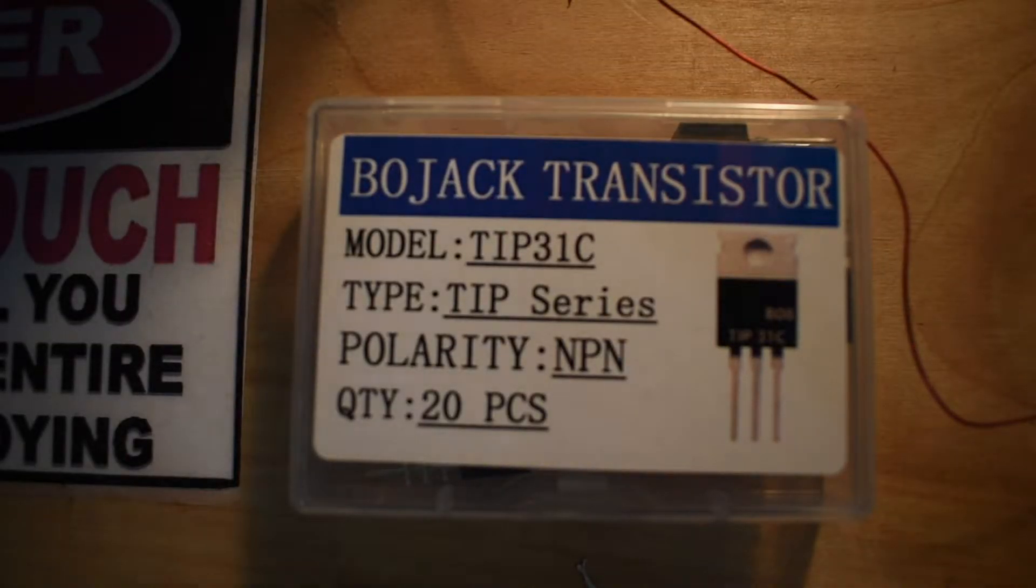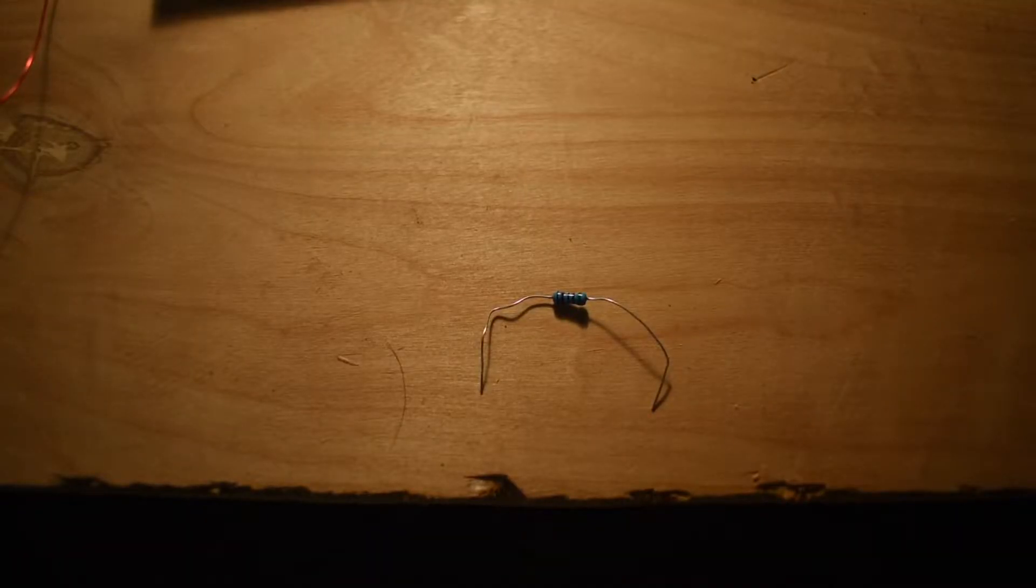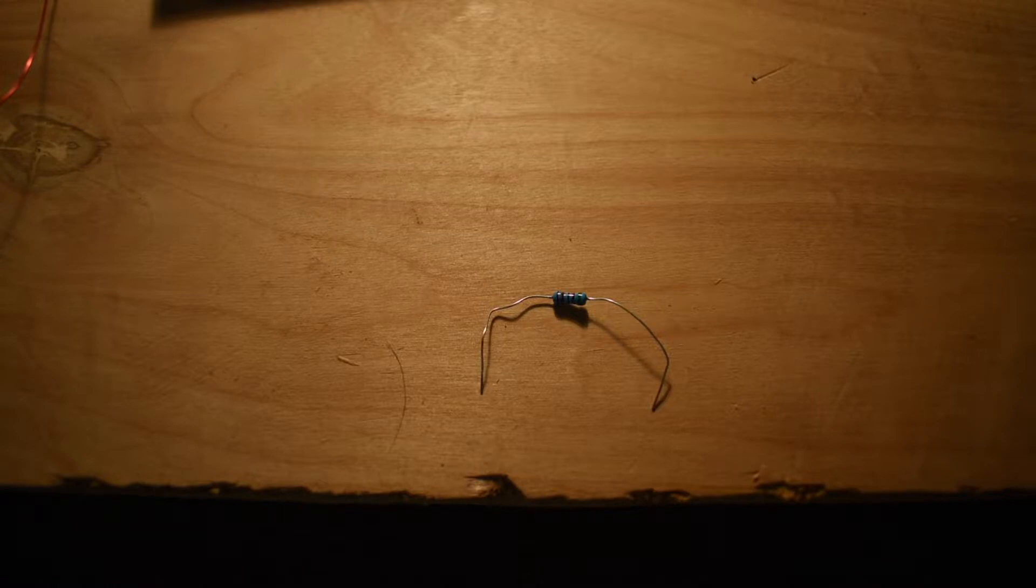Next you're going to need one of these TIP31C NPN transistors. And last but not least, you're going to need a 47 kilo-ohm resistor. Now the good thing with Slayer Exciter circuits is they're pretty flexible. So you can use a resistor value that's a little bit more or a little bit less than 47 kilo-ohms as long as it's within the ballpark.